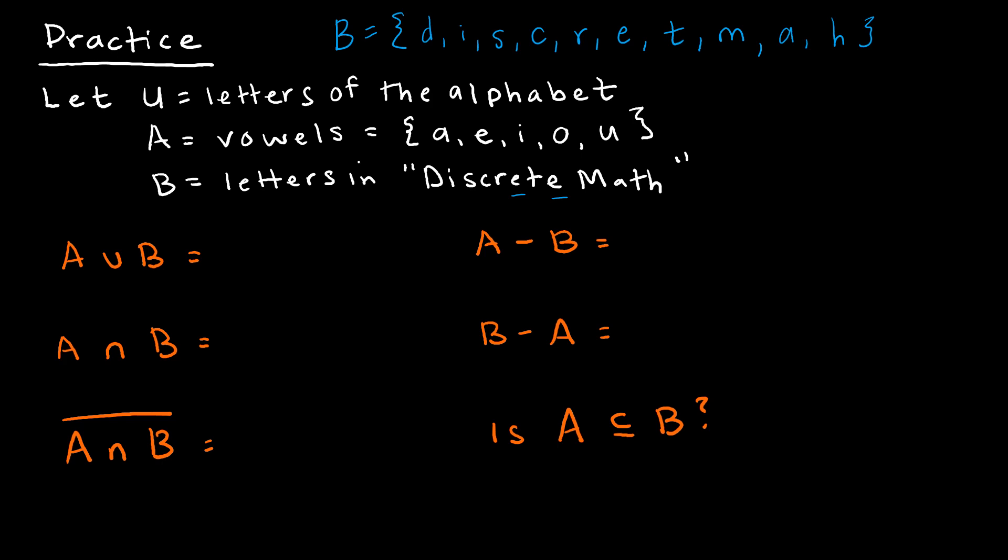So my first question asked me to find the union. And the union is kind of like the cup, and the cup contains all of the elements in either set. So set A is A, E, I, O, U. And then I'm going to also include everything in set B, but I don't have to rewrite A, E, I, O, or U. So I've got D, S, C, R, T, M, H. So all of those elements would belong to the union.